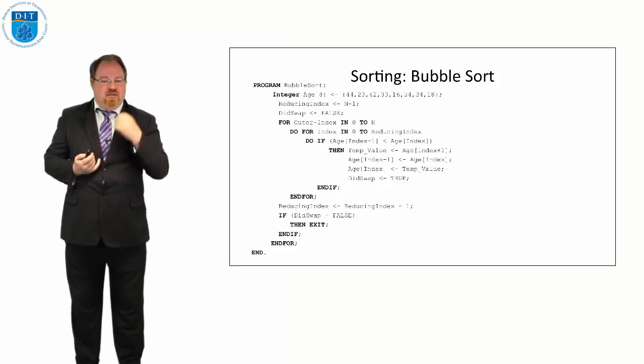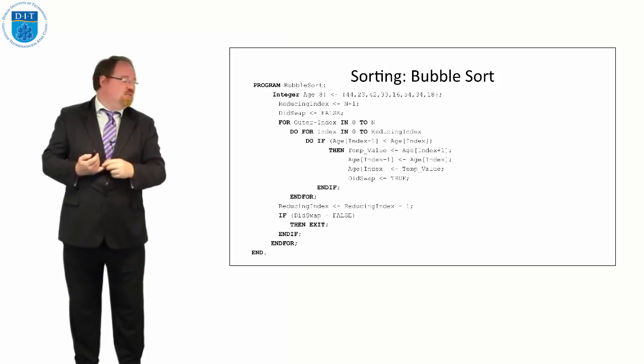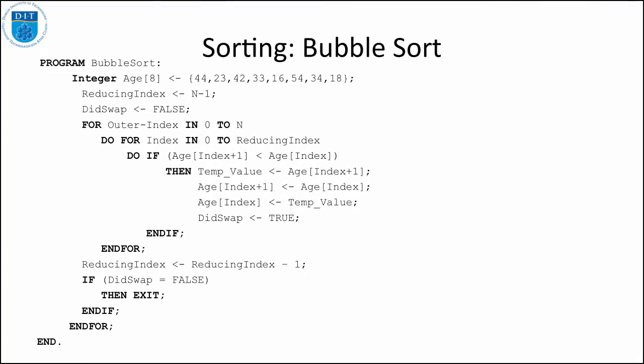So how we can do this is using our Boolean friend. So we know we've got a variable type called Boolean, and a Boolean can either be just true or false. So we're going to create a variable of type Boolean and we're going to say we did a swap, and we'll assume we'll set that to false at the start. So that's in green there, did swap is false.